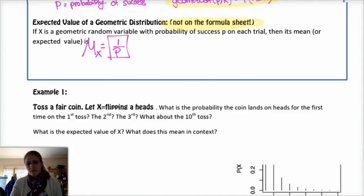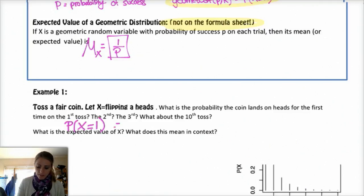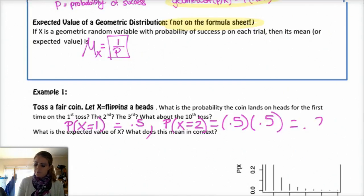We'll do one quick example. Toss a fair coin, let X be the random variable flipping a head. What's the probability the coin lands on heads for the first time in the first toss, and the second toss, and the third toss? What about the tenth toss? Pretty simple. For the first toss, the probability that X equals 1 is the probability of rolling a head on the first one, so 0.5. The probability of rolling heads on the second try, which would mean that you have a failure, which is a tail, and then a success on the second try, which is a head. So 0.25.